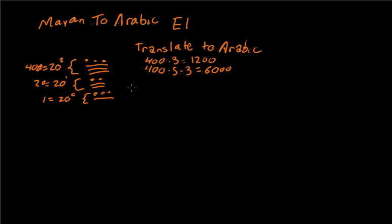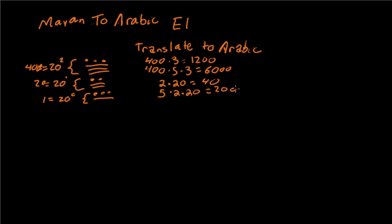Next, each dot here represents 20, so 2 times 20 equals 40. And then each of these lines would be worth 5 dots, times 2 lines, times the value of 20 — so 5 times 2 is 10, and 10 times 20 is 200.